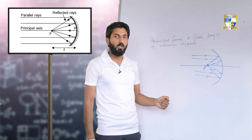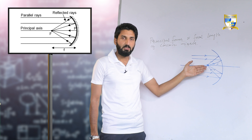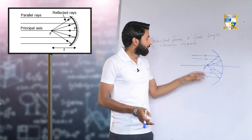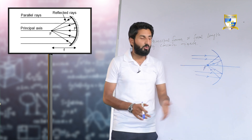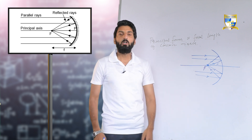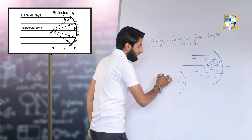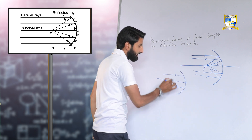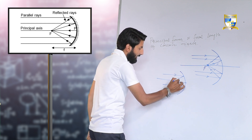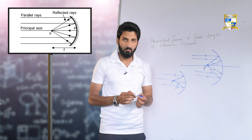So how would we define it? It is the point on the principal axis of the mirror where the rays of light, after reflection from the mirror, get converged. When the rays of light are incident on the mirror in such a way that they are parallel to the principal axis, after reflection from the mirror they meet at a common point. This common point is known as the principal focus of a concave mirror.